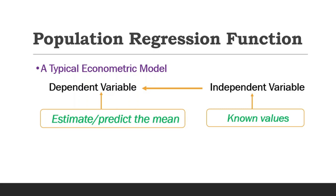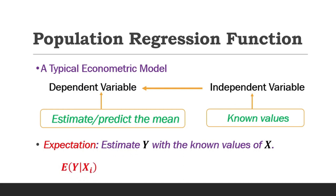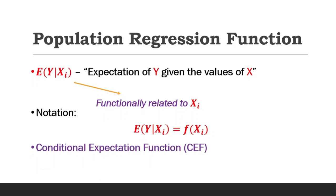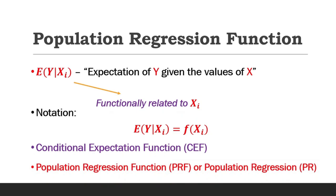The expectation is to estimate y, the dependent variable, with the known values of x. We represent this expectation as shown on the screen, which is read as the expectation of y given the values of x. This expectation of y given x is functionally related to x. The notation is given by E(Y|X) is a function of x. This is known as the conditional expectation function, or otherwise called the population regression function, or population regression for short.